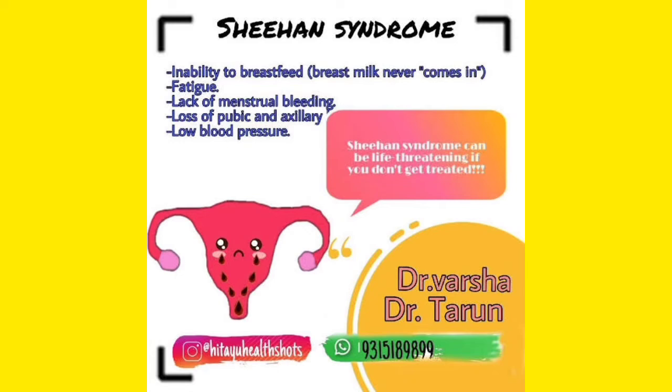In Sheehan syndrome: number one, inability to breastfeed — breast milk never comes in. Number two, fatigue — the patient will always complain of fatigue. Number three, lack of menstrual bleeding. Additionally, there is loss of pubic and axillary hair. As pituitary necrosis occurs, the pubic and axillary hairs will be lost from the body.